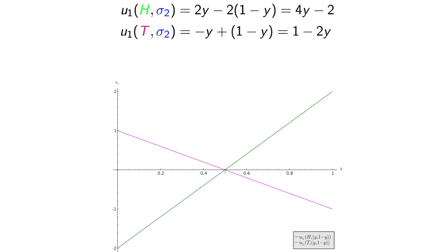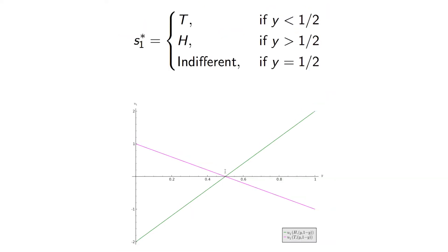So player 2 can choose a strategy that makes player 1 indifferent. Here we're writing the best responses for player 1. If y is less than a half, player 1 should play tails. If y is bigger than a half, player 1 should play heads. If y is equal to a half, he or she is indifferent.